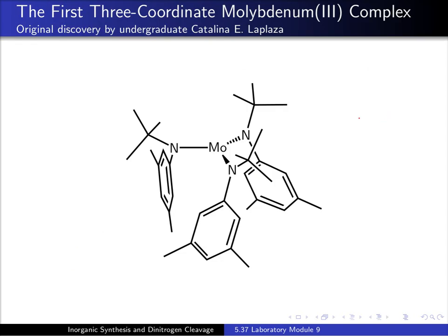The molecule at the center of the story is this three-coordinate molybdenum complex, which was in fact discovered by an undergraduate at MIT, Catalina La Plaza, working in my laboratory. Typical coordination numbers for molybdenum are four, five, and six, and even complexes with seven nearest neighbor atoms are known. This one has only three nearest neighbors — the nitrogen here, here, and over here. When a transition metal has only three nearest neighbor atoms, we refer to that transition metal as being three-coordinate, meaning the complex is in coordination number three around that central transition metal.